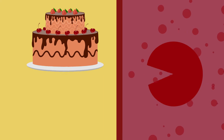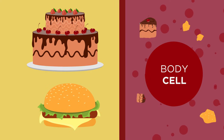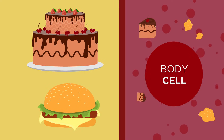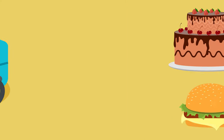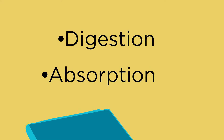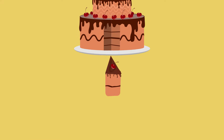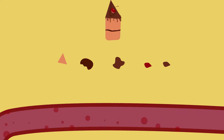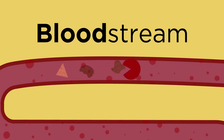We don't have chunks of cake or bits of burger floating around our bloodstream. So how do we get the energy from our food to ourselves? Two things have to happen before we can make use of our lunch: it needs to be broken down into smaller pieces, or digested, and then it needs to be absorbed into the bloodstream.